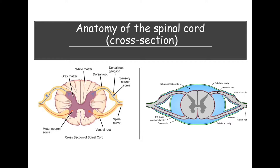The spinal nerves are actually formed when the roots come together. The spinal nerve is not part of the central nervous system — it's part of the peripheral because it's outside of the spinal cord. I'm going to talk about three structures you see here: pia mater, arachnoid mater, and dura mater — I'll talk about those a little bit later.